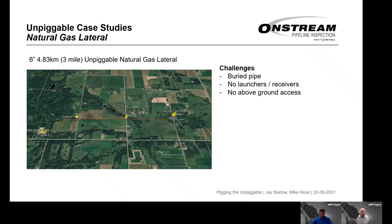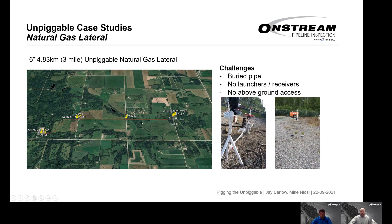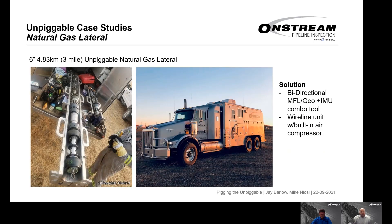In this particular example, it's a 6-inch line running from a metering station to a transmission line, visible in Google Earth. It's 4.83 kilometers long, about 3 miles. The challenges that make it unpiggable: the pipe is buried, there are no launchers and receivers, and there is no above-ground access whatsoever. Nothing is above ground at either end of the site.